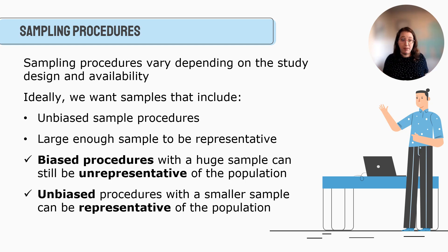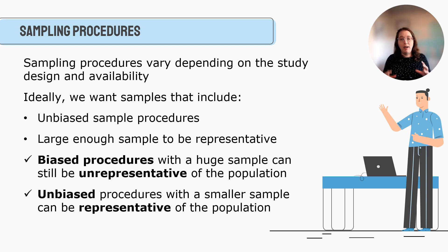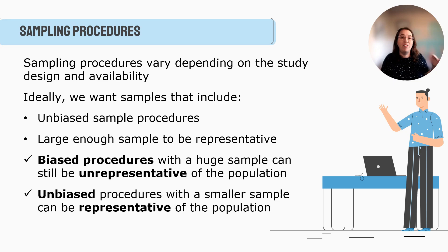Alternatively, you can have unbiased procedures through probability sampling and the sample can be representative of the population. That's why we can do large-scale political surveys and have a pretty good idea of how the country feels, often based off only one to two thousand people. The goal is to increase external validity — is it representative of the larger population, and how do we select people in a way that minimizes bias?